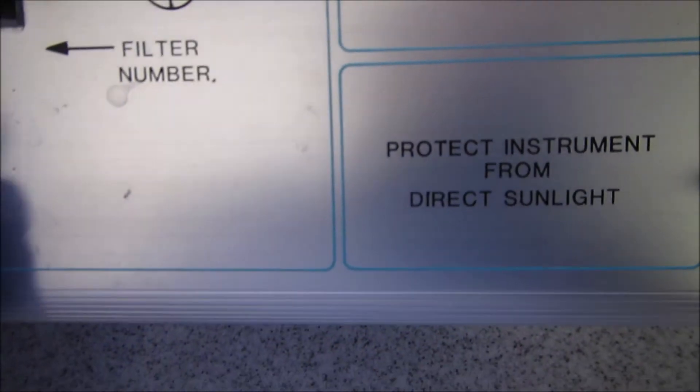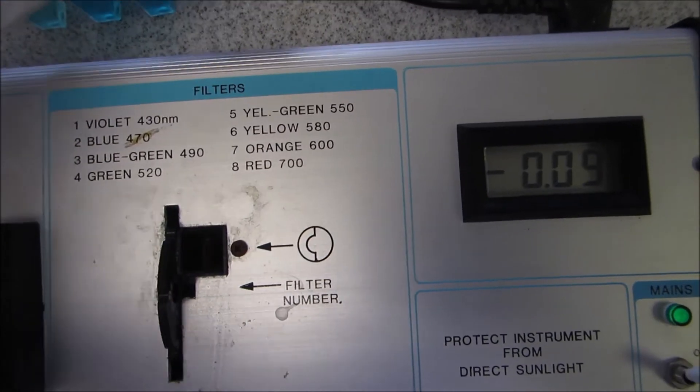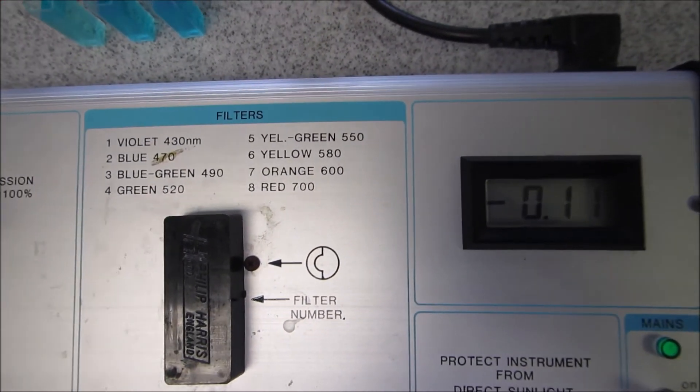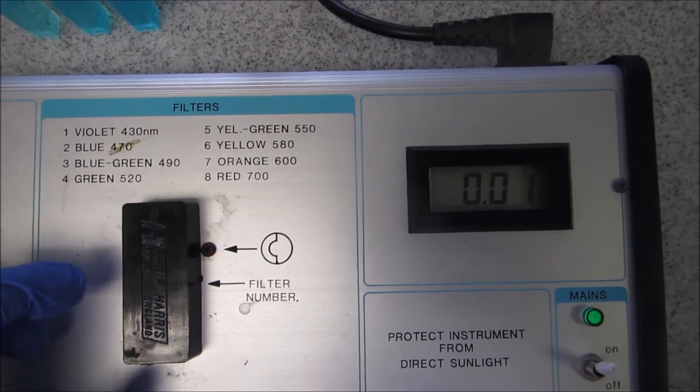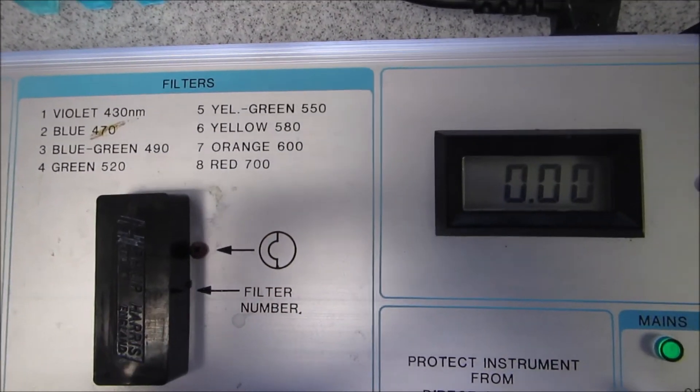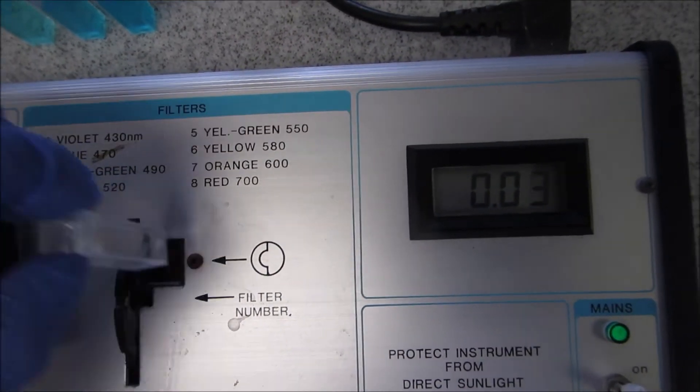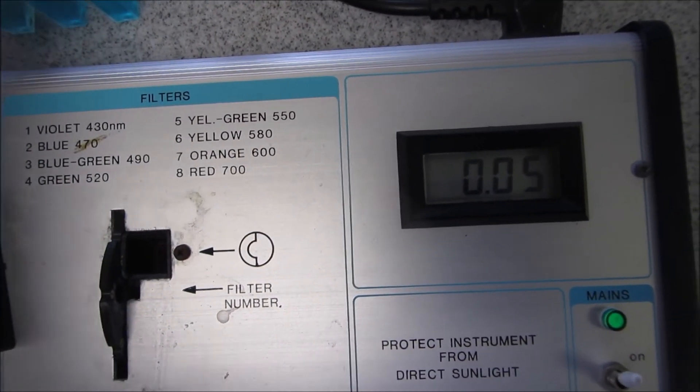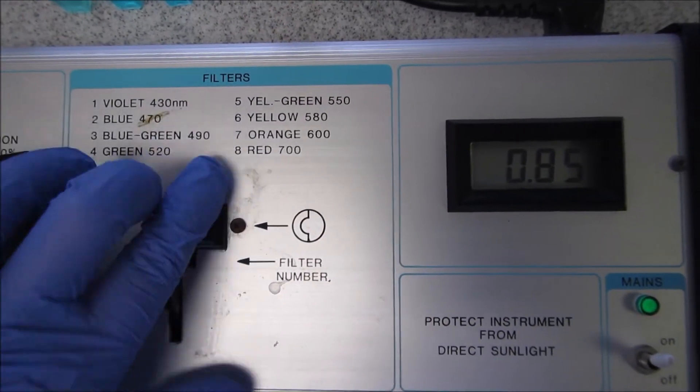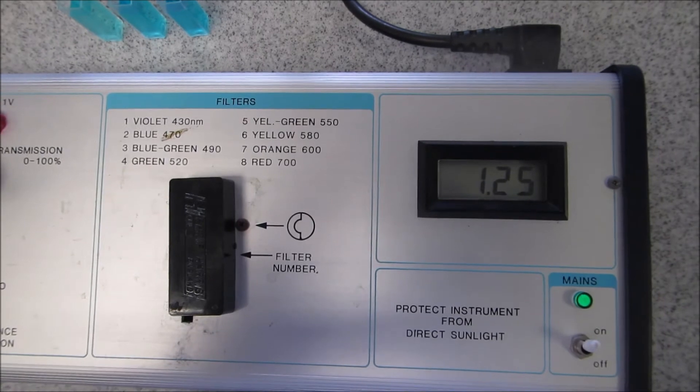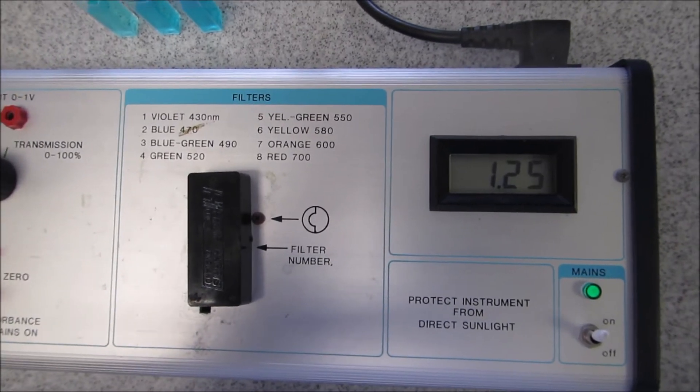So now we're on number 7 which is 600 nanometers. Again I'll blank it and zero it on the blank, then put in my 1 molar. Now you can see that you're starting to get quite a high absorbance. That's what we're looking for.